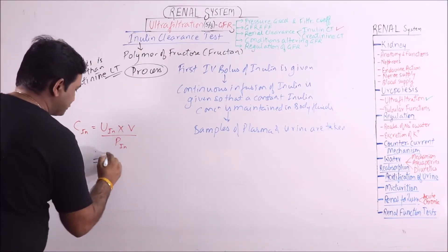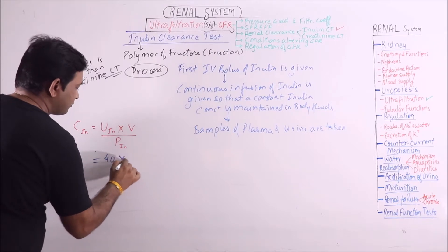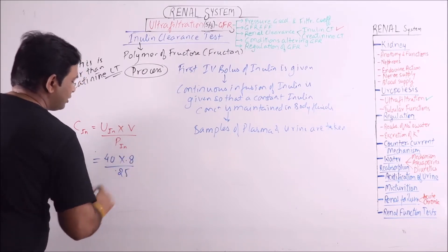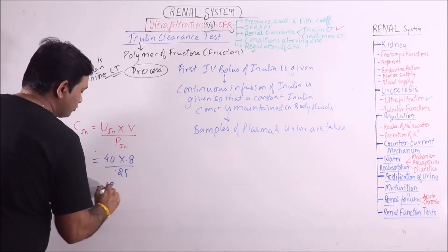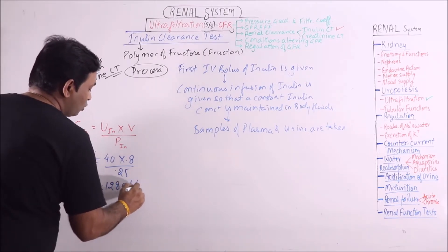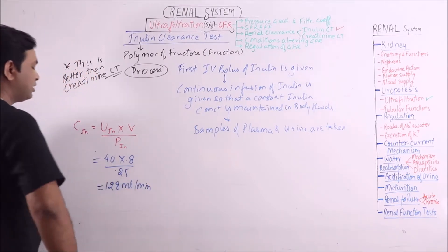For example, we take some experimental values: urine inulin equals 40, flow equals 0.8, and plasma inulin equals 0.25. It comes out to be 128 ml per minute.